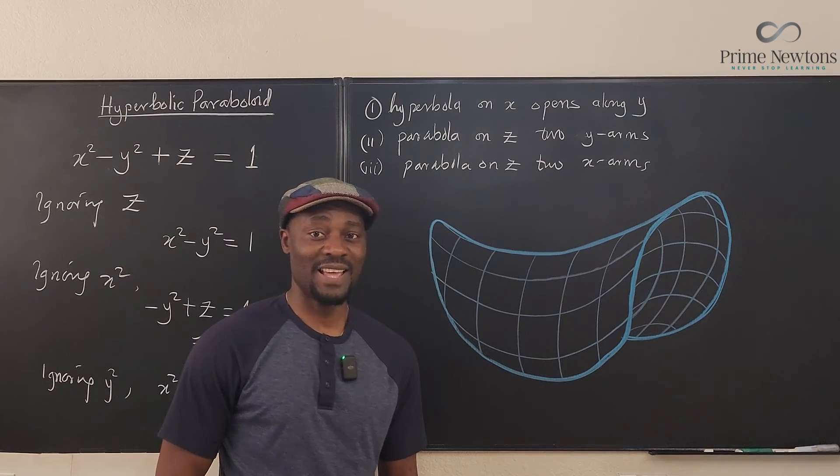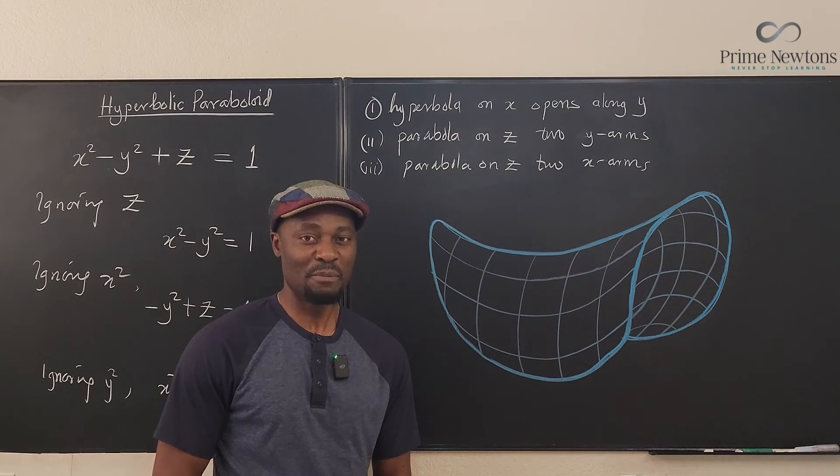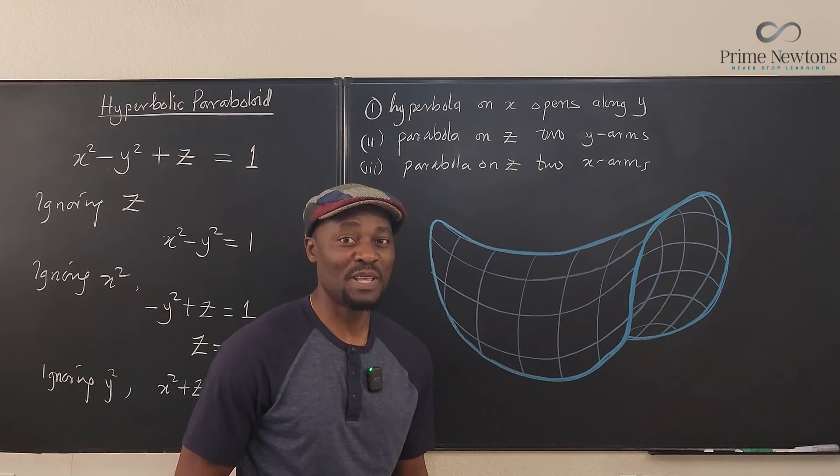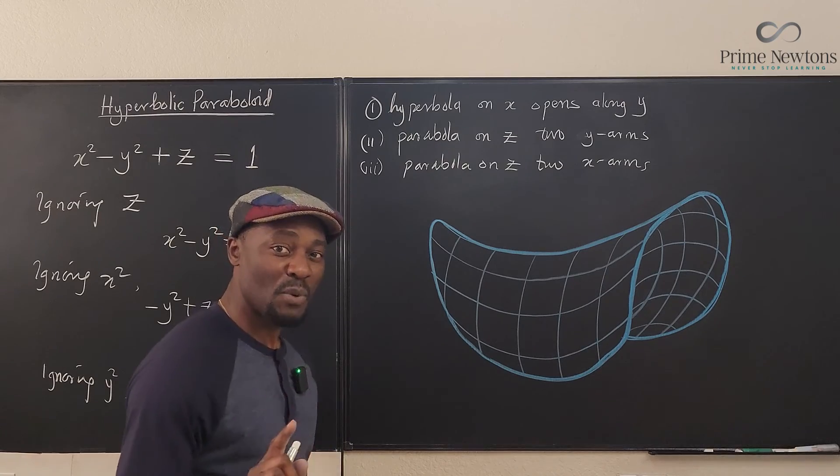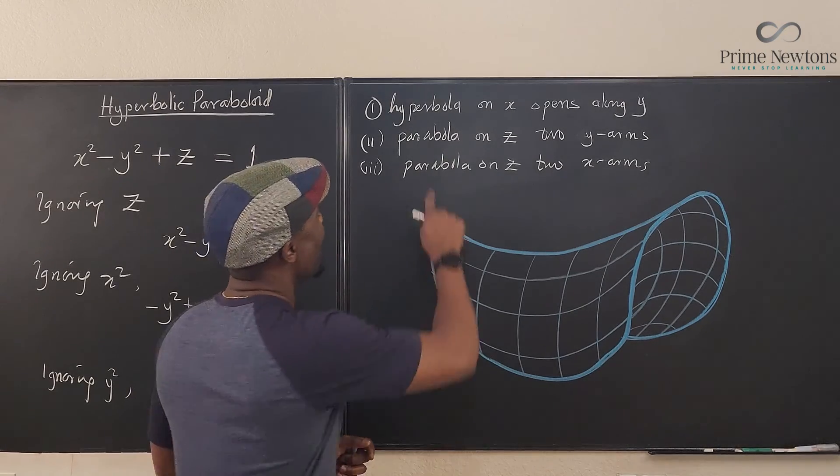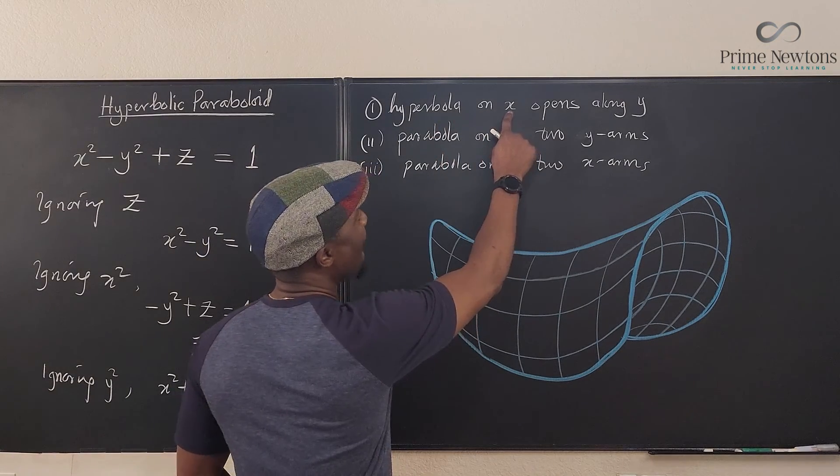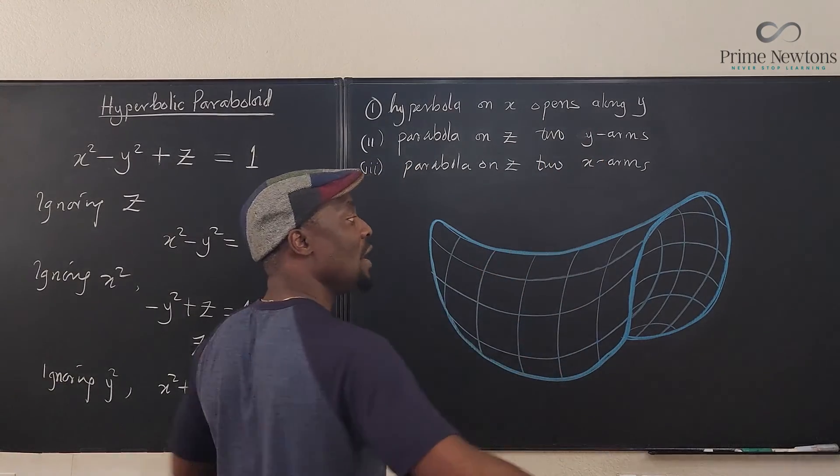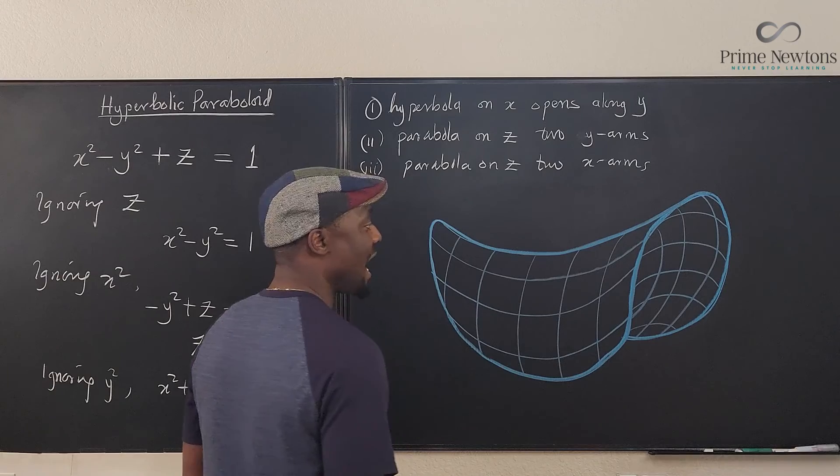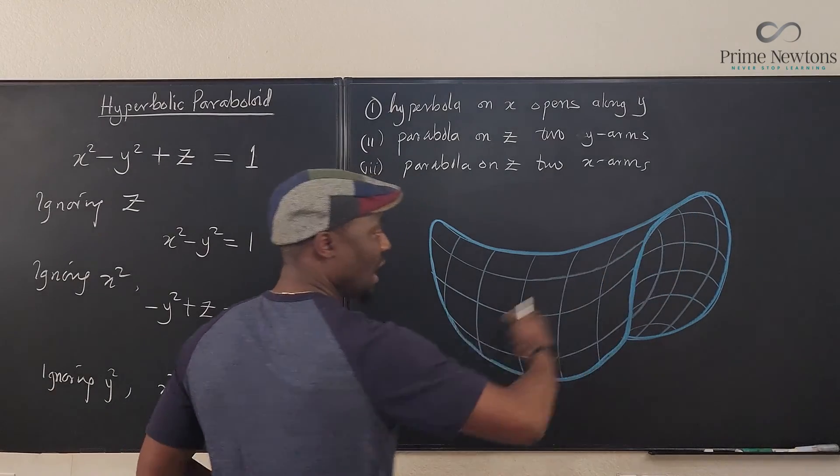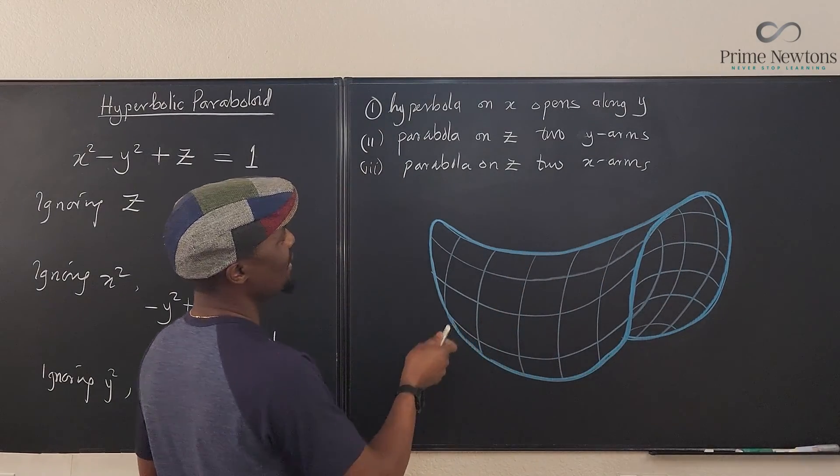This looks like a piece of Pringles, it looks like a saddle, and it is indeed a hyperbolic paraboloid. But the only thing we need to fix will be the axis for each of these curves and bends. So here we go. Remember what we said, we said that the hyperbola is going to be on x and opens along y, so it's going to flap its wings this way. So it means that x has to be not along that direction.